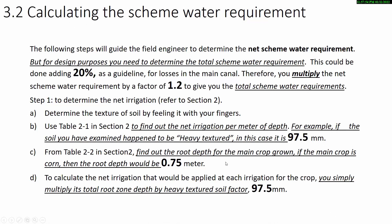The following steps will guide the field engineer to determine the net scheme water requirements. As a guideline, 20 percent is added for losses in the main canal. Therefore, you multiply the net scheme water requirement by a factor of 1.2 to give the total scheme water requirements. Depending on the situation and other factors, this factor of 1.2 may vary.